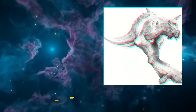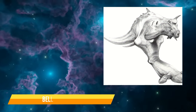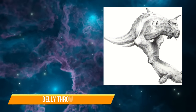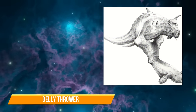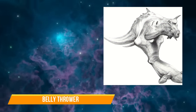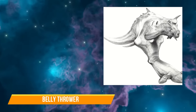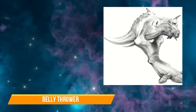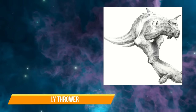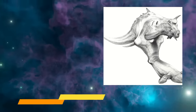The Belly Thrower is a fierce predator that ejects its stomach from its oral sphincter and throws it over its prey like a net, then pulls it in slowly, digesting its unfortunate victim as it struggles to get free.